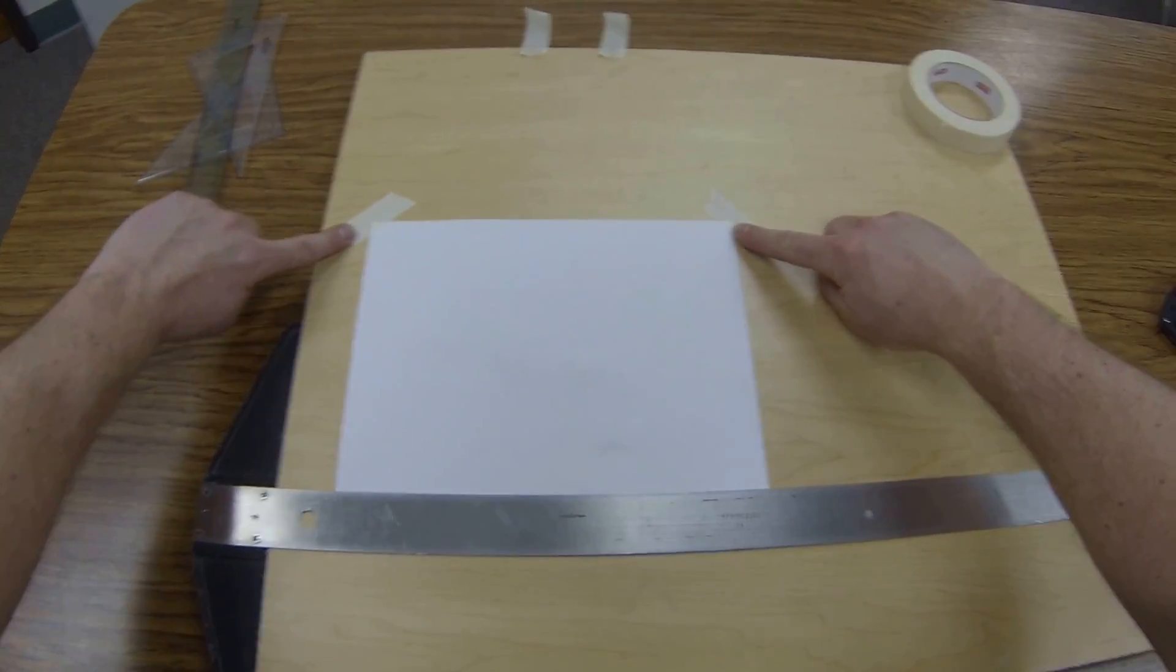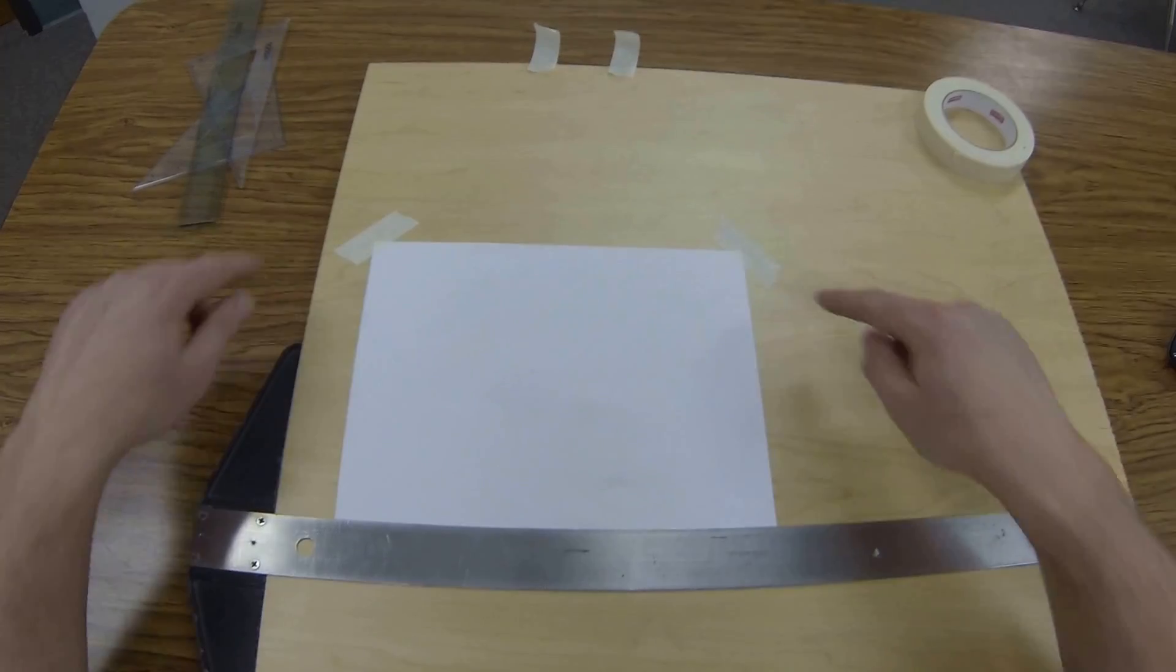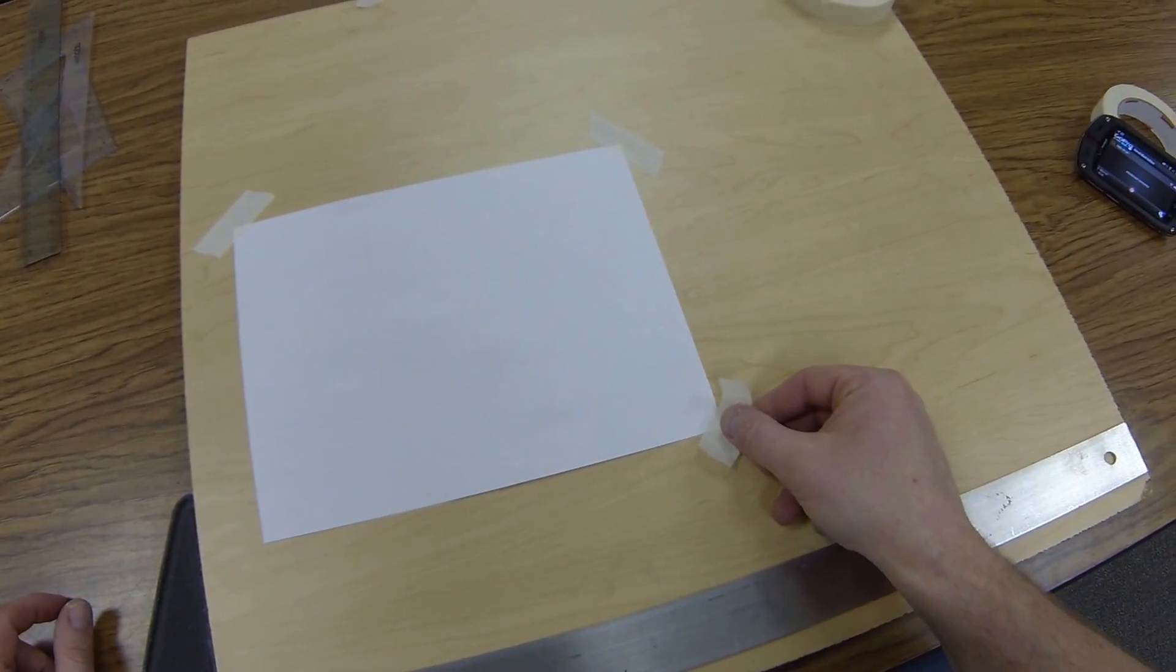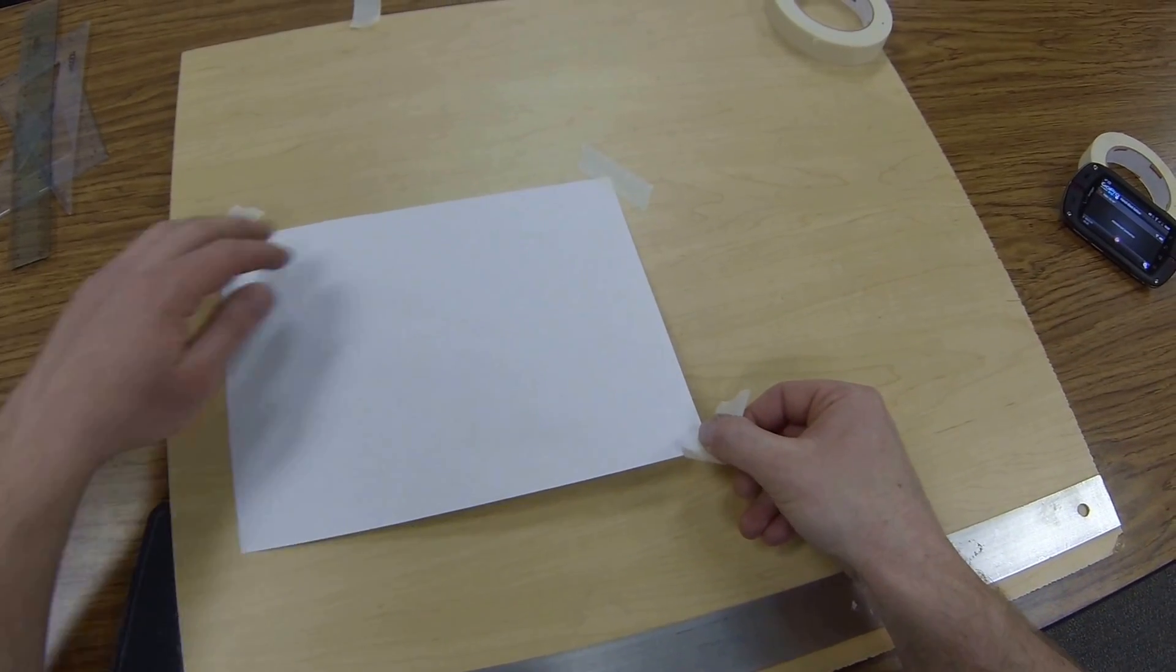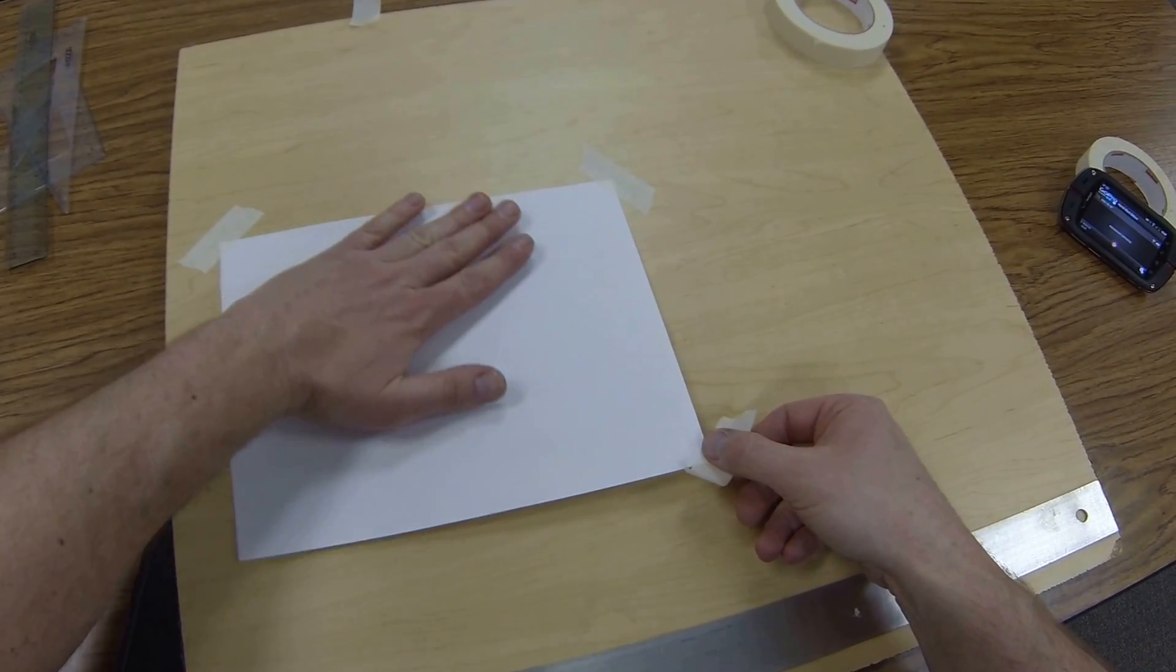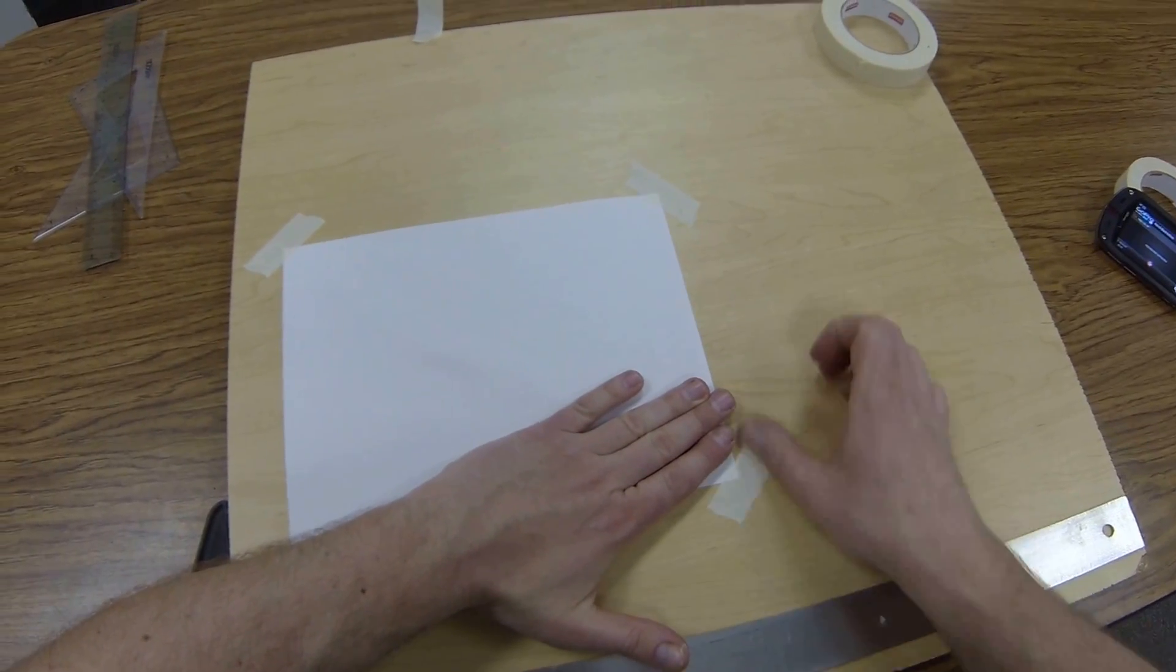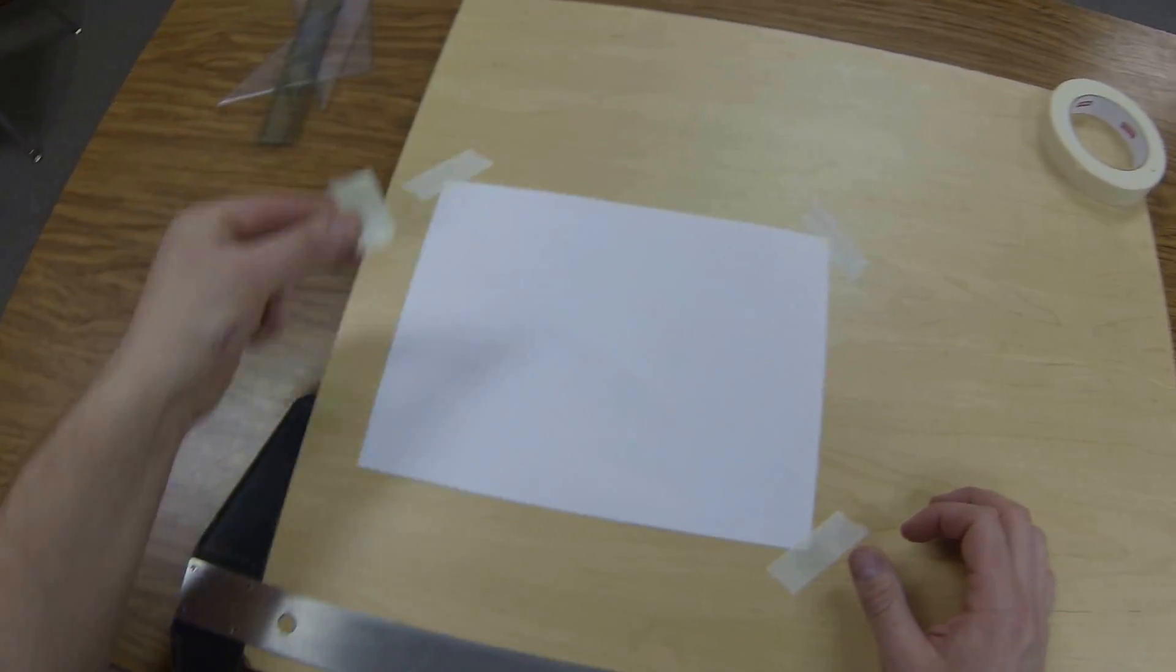Now I have both of the upper corners taped down. All I need to do next is slide my t-square out of the way and pull another piece of tape. I'm going to pick it up, stick it, and work the air out, working the tape into the board, not into the paper. Do the same thing on the opposite side.